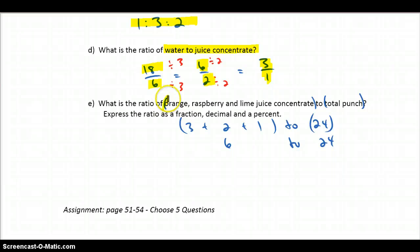And then finally, what is the ratio of orange, raspberry, and lime juice concentrate? Okay, add them all up here. I got 6 cans to total punch. We know the total punch is 24. So, in that case, we're talking 6 to 24. And again, we want to get that into lowest terms. So, if we divide by the 6 here, we get 1. We got a quarter. And then as a decimal.